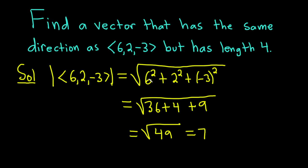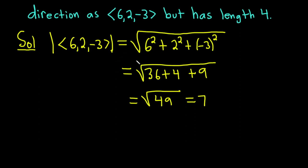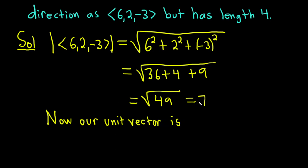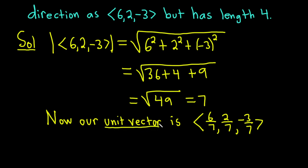To turn it into a vector that has length 1, we just divide by 7, or multiply by 1/7. Our unit vector — a vector of length 1 — is found by dividing each component by 7. So it will be 6/7, 2/7, and negative 3/7. This vector is a unit vector in the same direction as our original vector — in other words, it's a vector of length 1.